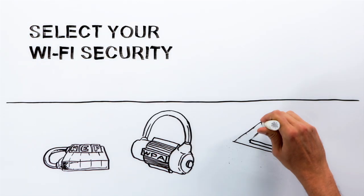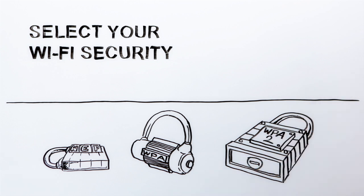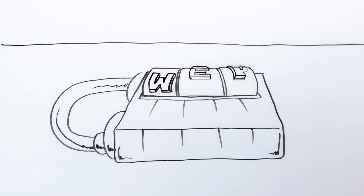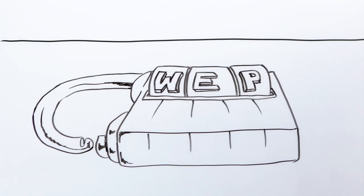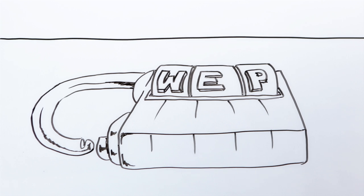But just as some locks are stronger than others, not all Wi-Fi security is created equal. The oldest standard for secure networks is called WEP, and it's a pretty weak lock. WEP security might stop a casual criminal, but it's actually not that hard to break.